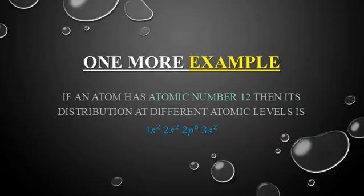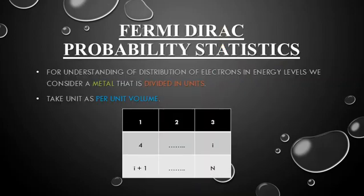Another example: for an element with atomic number 12, its electron configuration is 1s², 2s², 2p⁶, 3s². This kind of distribution across atomic levels, along with the quantum number formulas, is used for understanding the Fermi-Dirac probability statistics and the distribution of electrons in energy levels.